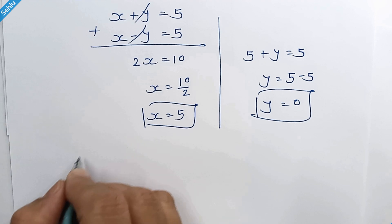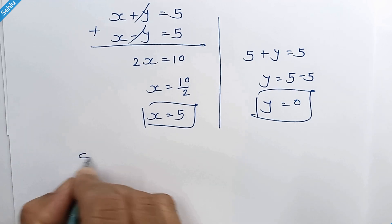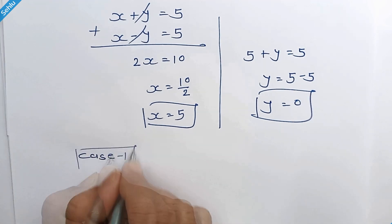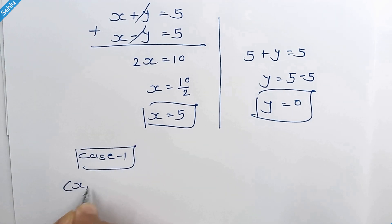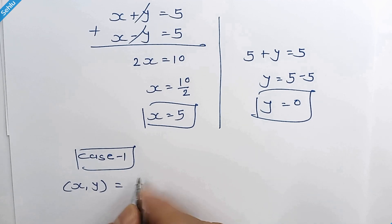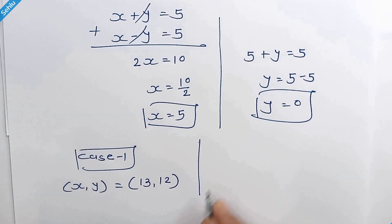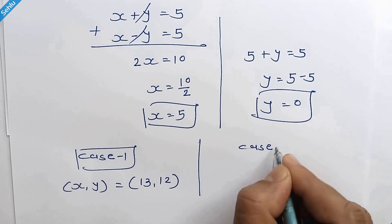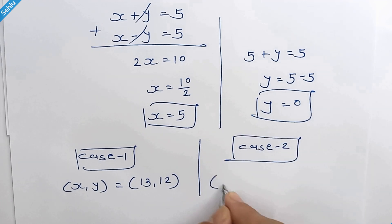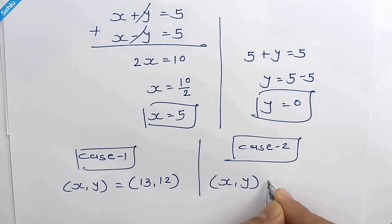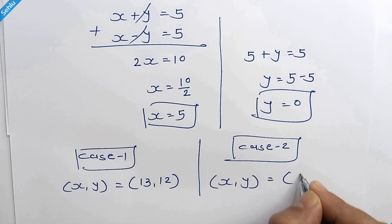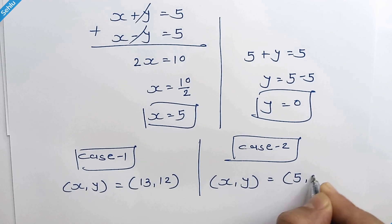For case 1, we have x and y equal to 13 and 12. And for case 2, we have x and y equal to 5 and 0.